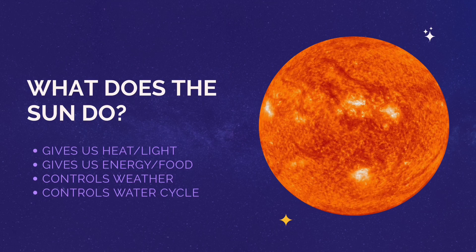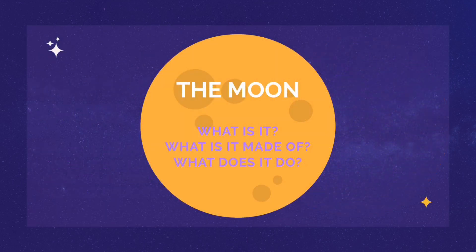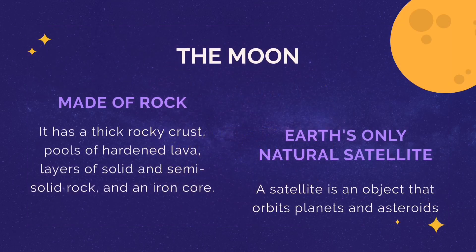Now let's move on to talk about earth's other best friend — the moon. What is it, what is it made of, and what does it do? The moon is a big old rock. It has a thick rocky crust on the outside; inside it has pools of hardened lava and layers of solid and semi-solid rock, and in the core right in the center it's made out of iron. The moon is especially special to earth because it's our only natural satellite — a satellite is an object that orbits planets and asteroids.